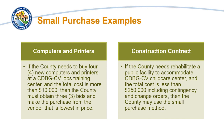If the county needs to buy four new computers and printers at a CDBG-CV jobs training center and the total cost is more than $10,000, then the county must obtain three bids and make the purchase from the vendor that is lowest in price. If the county needs to rehabilitate a public facility to accommodate CDBG-funded child daycare services and the total cost is less than $250,000, including contingency and change orders, then the county may use the small purchase method.